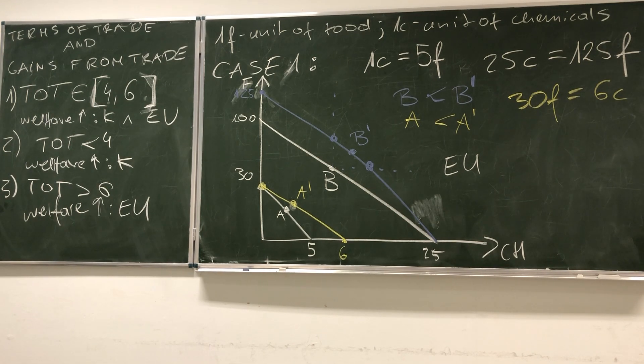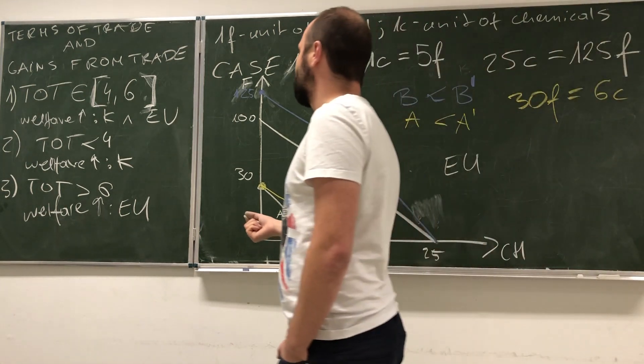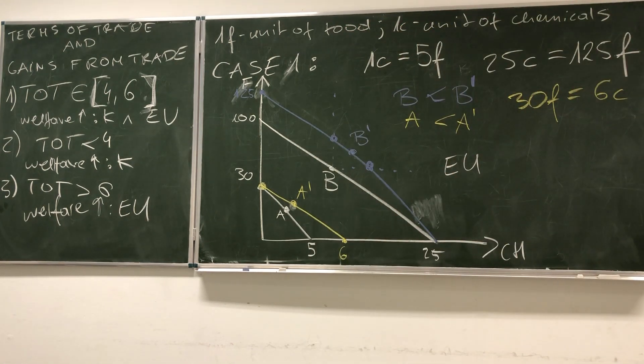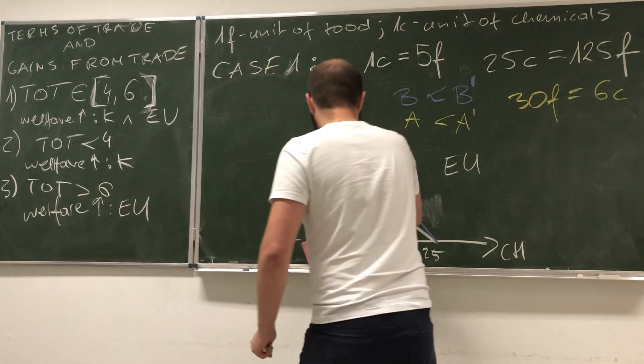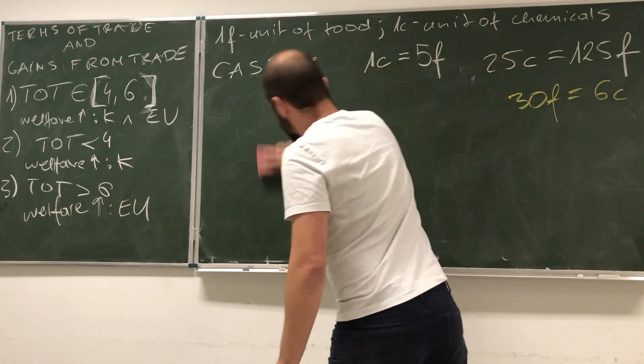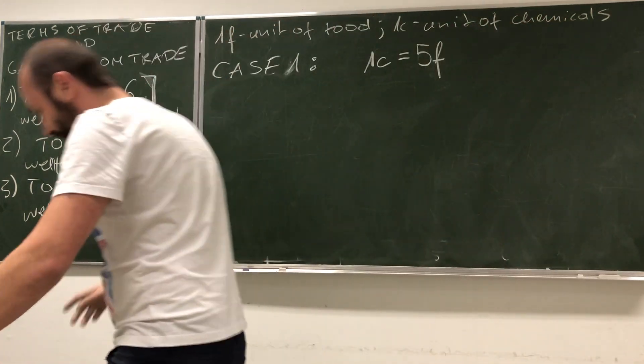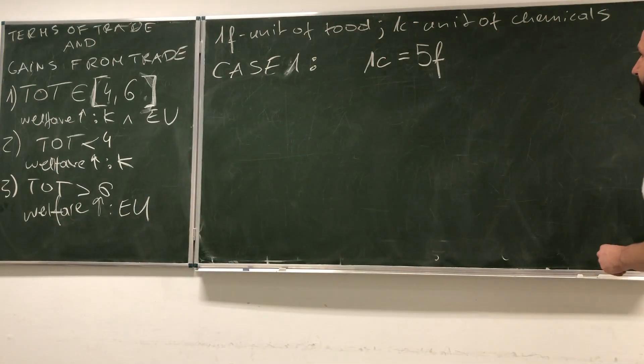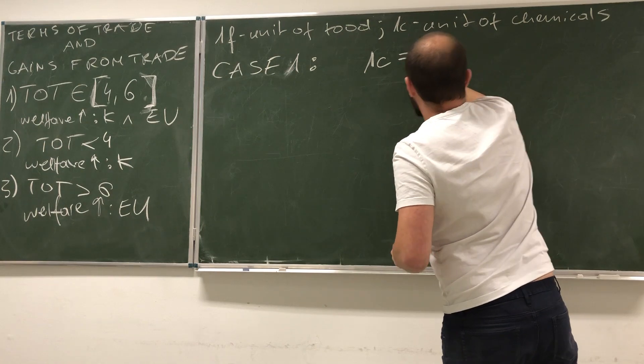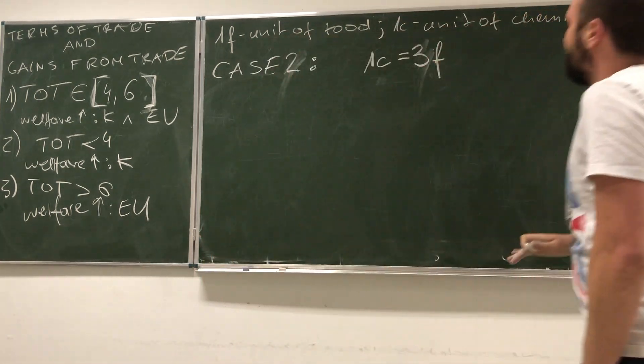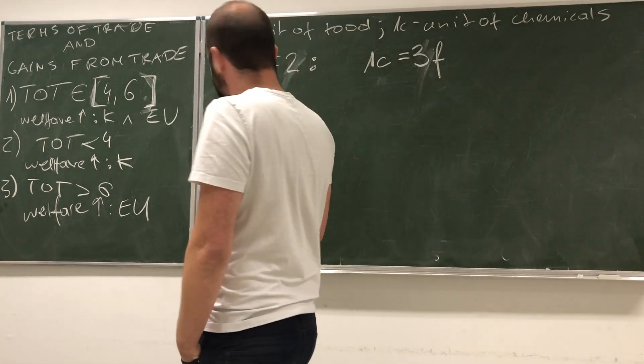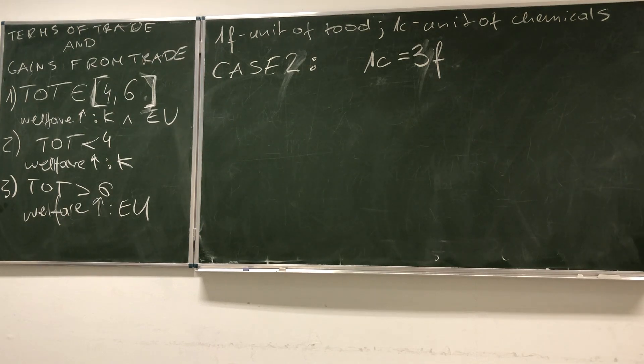We clearly see that once we've established trade between these two countries, both of them can benefit. But of course, let's also see a situation in which only one of the countries benefits. Now let's go to case number 2. In case number 2 we have terms of trade that are lower than 4. Let's again make it very simple and say 1C equals 3F. One unit of chemicals on the international market can be exchanged for 3 units of food.